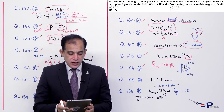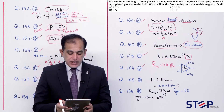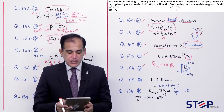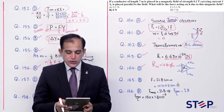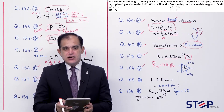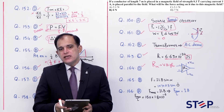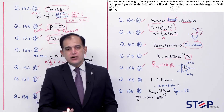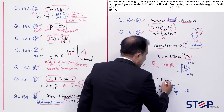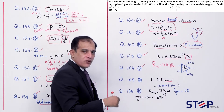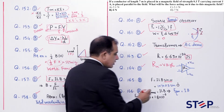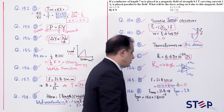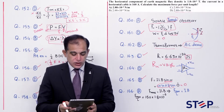Question number 165: Conductor of length 7m in magnetic field of 0.3 Tesla carrying 1 Ampere, placed parallel to field. F = BIL sinθ. Parallel to field means θ = 0°, sin0° = 0. Force = 0. Correct option: Beta.